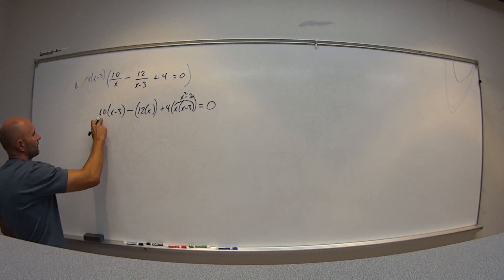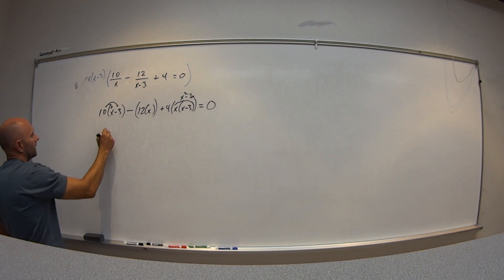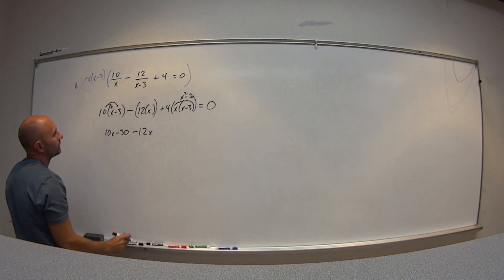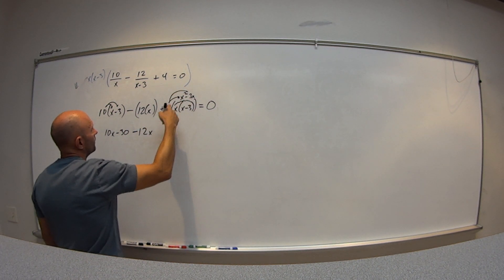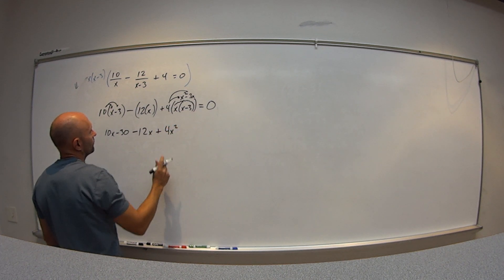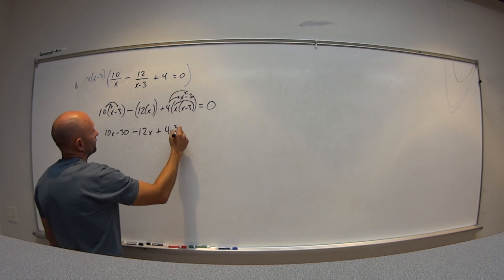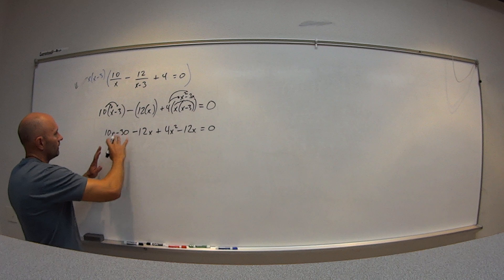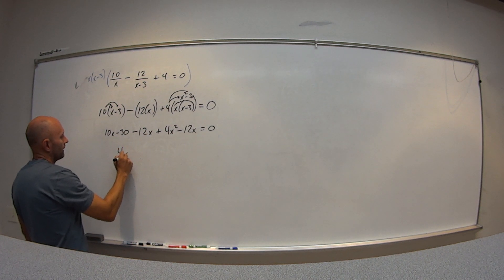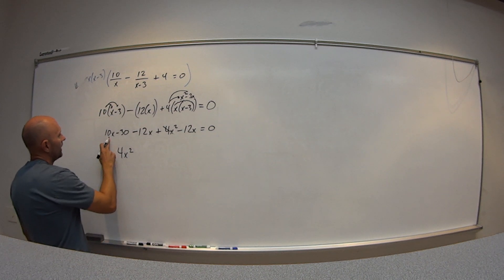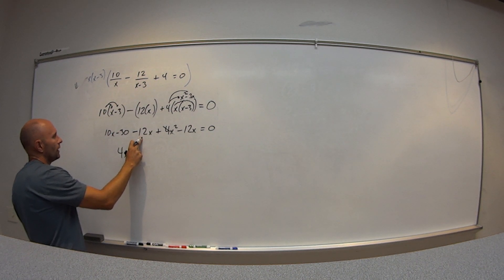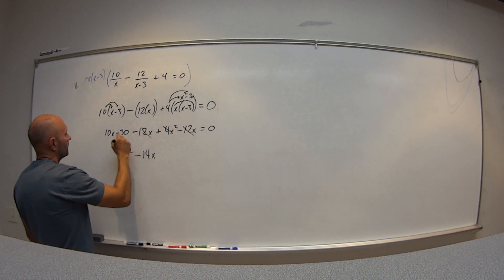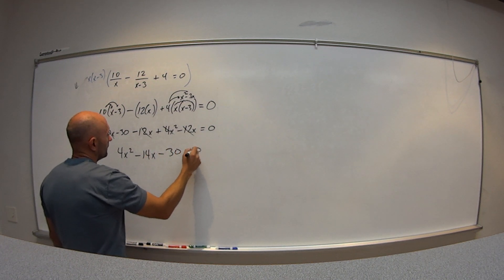Simplify by distributing. I get 10x minus 30, minus 12x, then distribute the 4: plus 4x squared minus 12x, all equals 0. Arranging in descending order, I have 4x squared. Then 10x minus 12x minus 12x gives minus 14x, and then minus 30 equals 0.